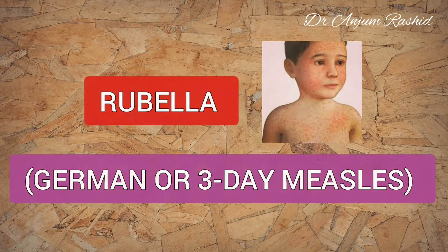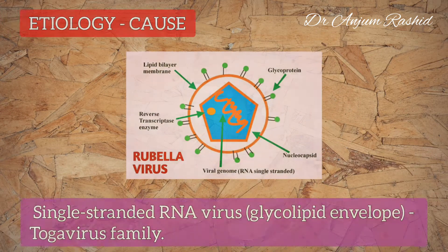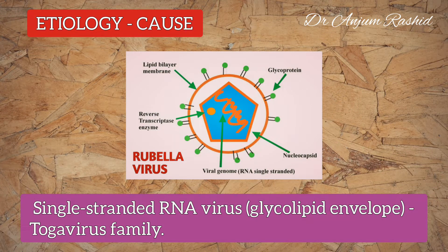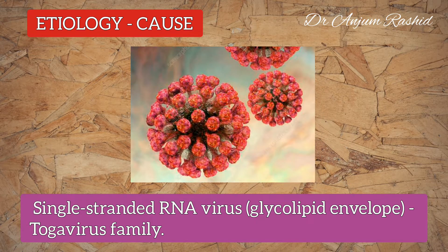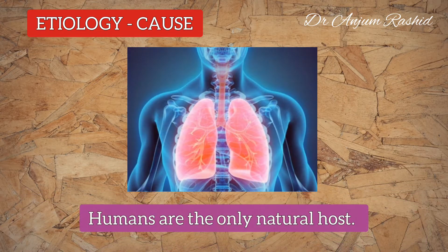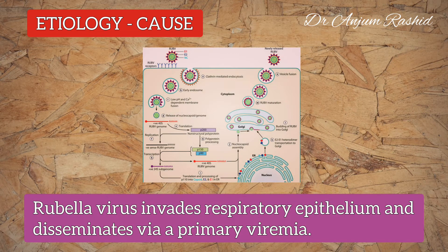Hello everyone, welcome to my channel. This video is about rubella infection, also known as German or three-day measles. Rubella infection is caused by a single-stranded RNA virus which has a glycolipid envelope. This virus is a member of the Togavirus family. Humans are the only natural host.